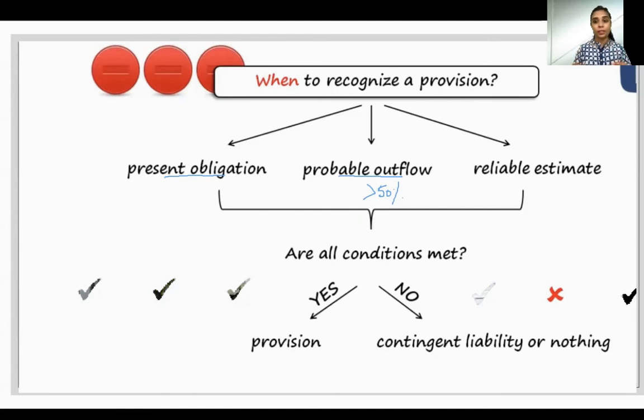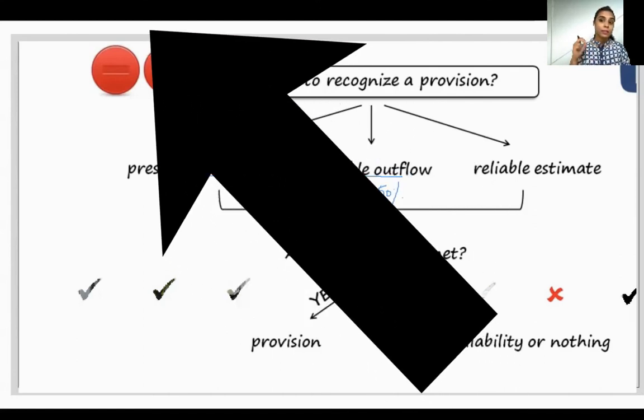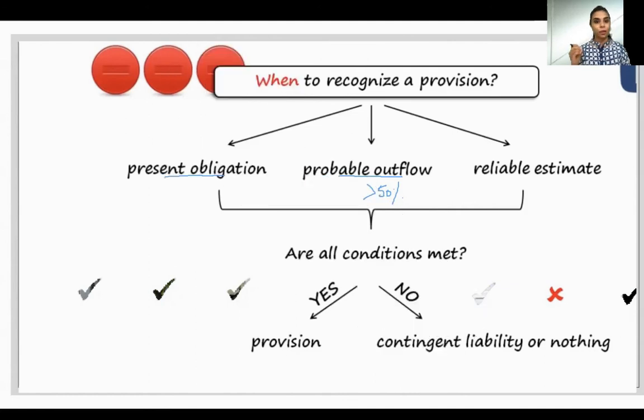And mere lawyer ne kaha ki 60 percent, ya 90 percent, mein case har jauungi. And usne muje ek estimate bataya, he is an expert, lawyer is an expert. So he gave me an estimate that aapke 10 lakh ja sakte hai. So this is a provision. I will create a provision because it is a present obligation and there is a probability of outflow of resources and there is also a reliable estimate that is given to me by my lawyer. So in this case, I am going to recognize this as a provision.